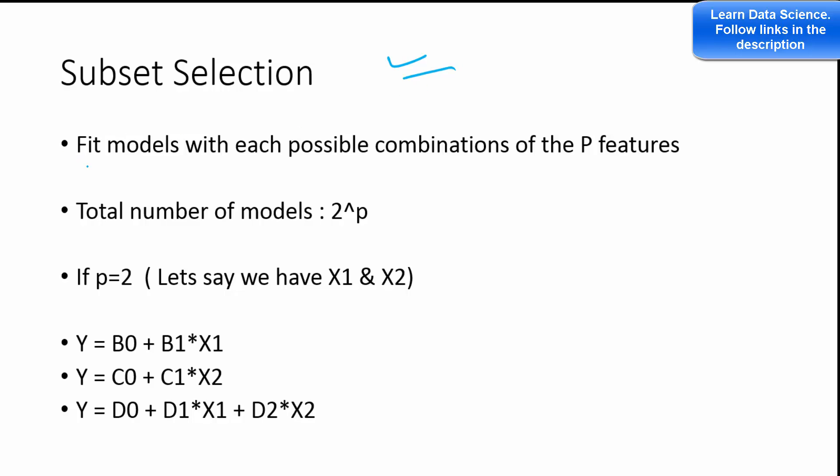So what is subset selection? In subset selection you fit models with each possible combination of p features. Let's say we have p number of features or independent variables. The total number of models that you will be having is 2 to the power p. If you have two features, if p equals 2, then the total number of models will be 4.